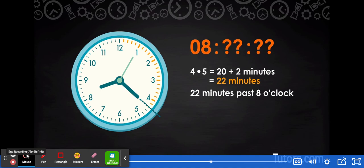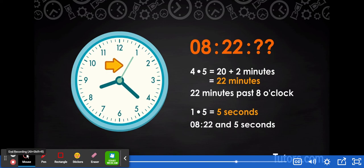We are 22 minutes past eight o'clock, so we are at 8:22. Last are the seconds. In this picture, the second hand is pointing at the one. One times five is five, so the clock is showing five seconds past the minute, so our clock time is 8:22 and five seconds. The time can be written like this.